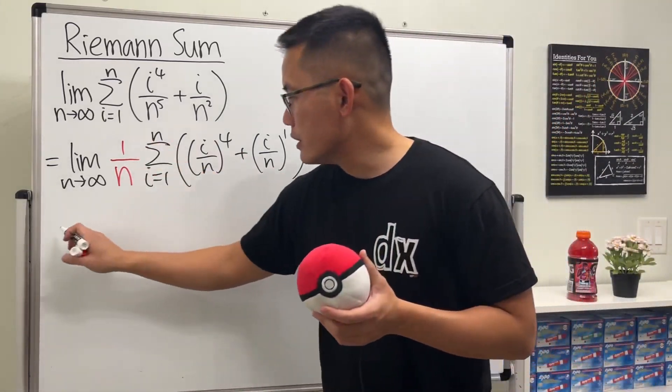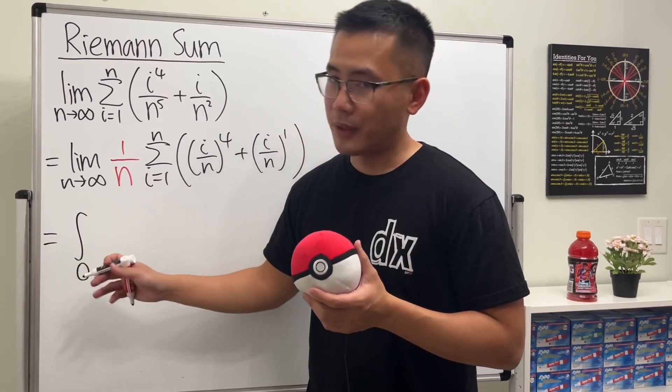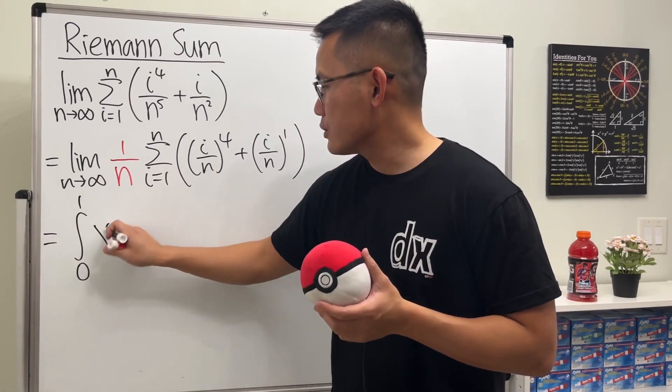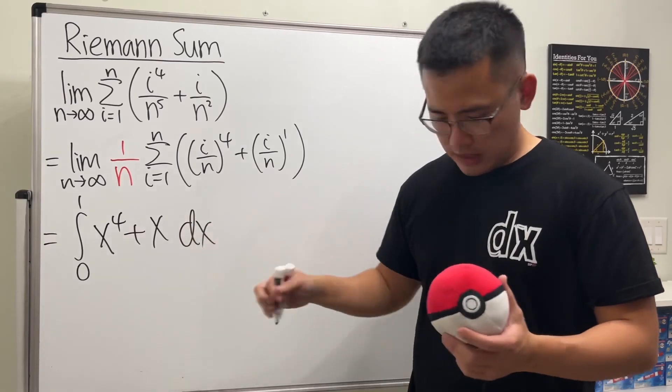Yeah, so this right here we can go ahead and convert that into the integral going from zero to one, and this is x to the fourth and then plus x to the first, and then don't forget the dx.